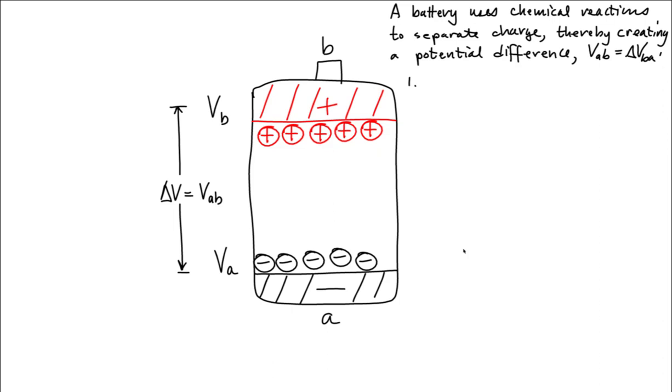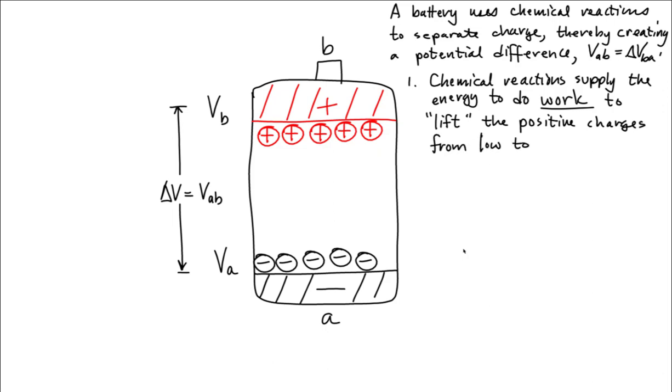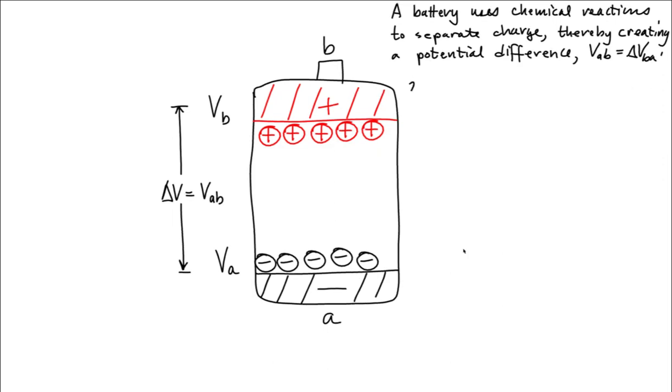It's the chemical reactions that supply the energy to do the work to lift the positive charges from low to high potential. The work done per charge is called the EMF of the battery, and that's given by that fancy symbol. It's a Greek letter called kassai. And so that EMF, kassai, is equal to the work per unit charge.